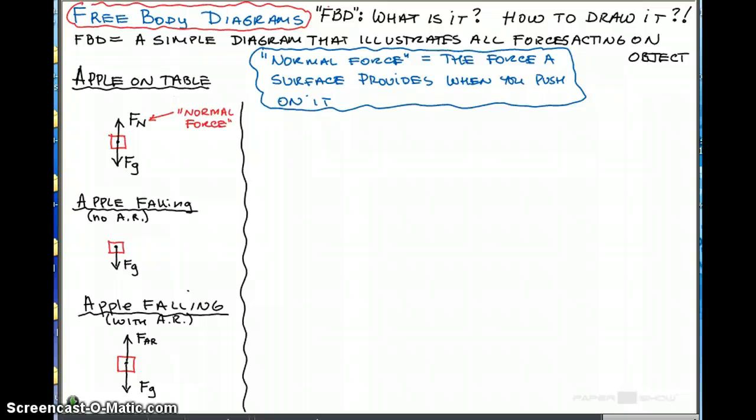How about an apple suspended from a string? Apple suspended by string. Let's draw our apple. We know that we have a force of gravity pulling it down, FG. And we have a string that's preventing it from falling. So the string must apply an upward force. Let's call that F-S, S for string in this case, pulling upwards.